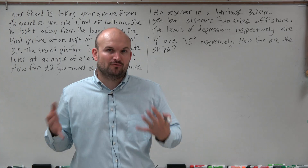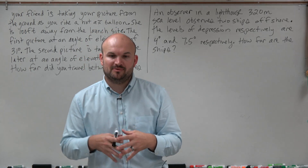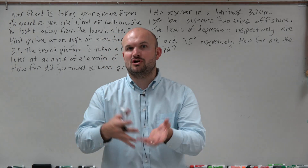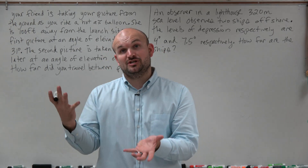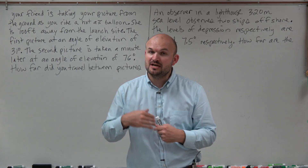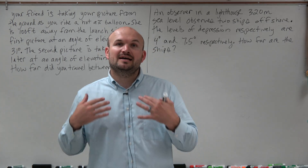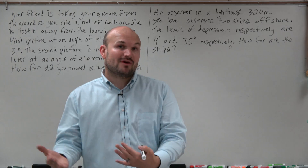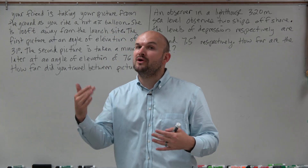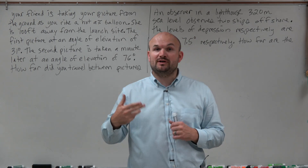The same idea as what we've done previously: read through the problem, underline the important pieces of information, and then try to construct a picture of the problem. Since we're using trigonometric functions to solve for the missing parts, we're going to need to create right triangles — because you can only apply trigonometric functions from right triangles. In these examples, we're going to have more than one right triangle.